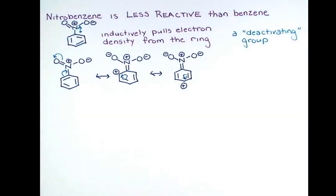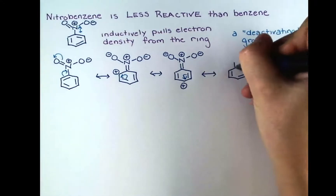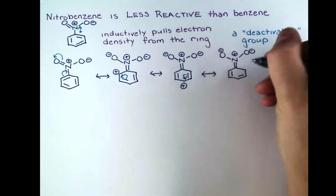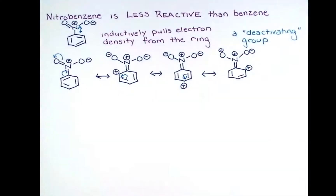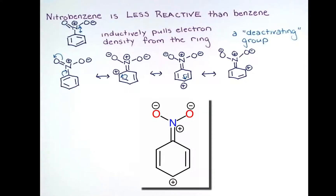This charge-separated resonance form is not the best resonance form for nitrobenzene, but it does contribute and gives important insight into nitrobenzene's reactivity. Looking at an animation of how this resonance occurs, notice that when a pair of electrons moves away from any one of the carbon atoms, we gain a formal positive charge on that carbon.